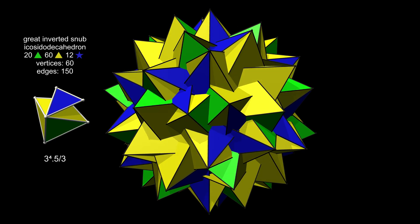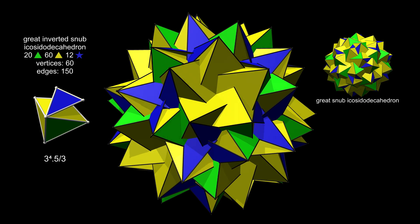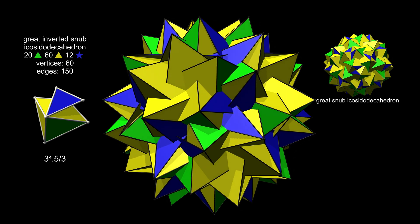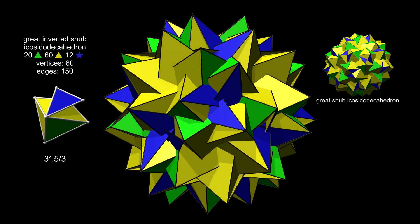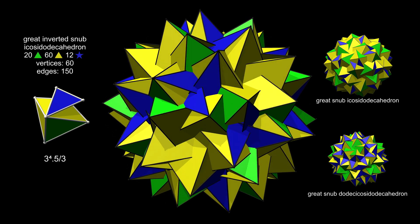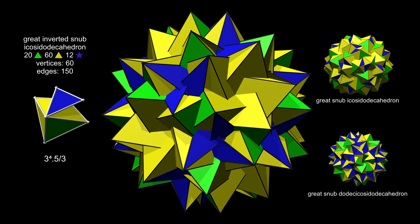The great inverted snub icosidodecahedron is similar to the great snub icosidodecahedron, the only difference being that the pentagram is inverted in its vertex configuration. It is also similar to the previous figure, the great snub icosidodecahedron, but has one of the pentagrams missing from its vertex configuration.